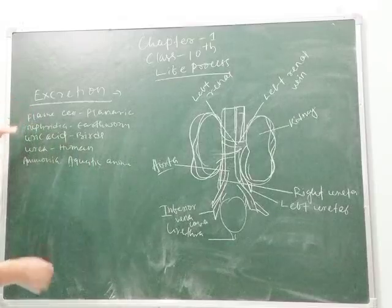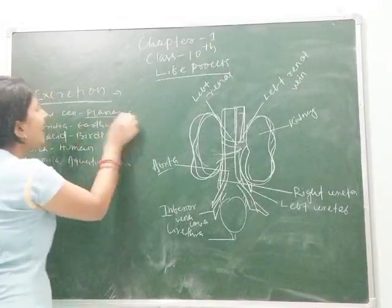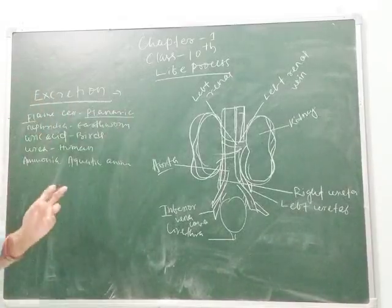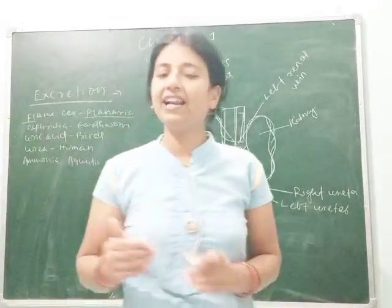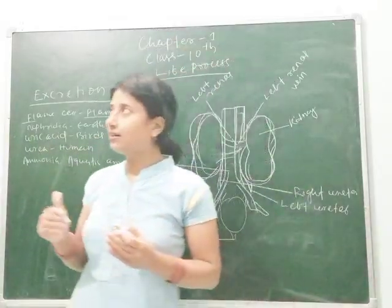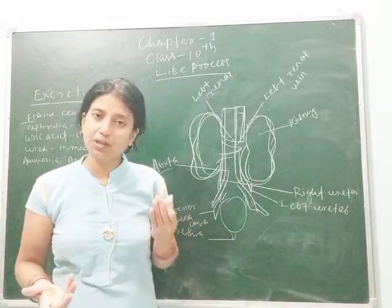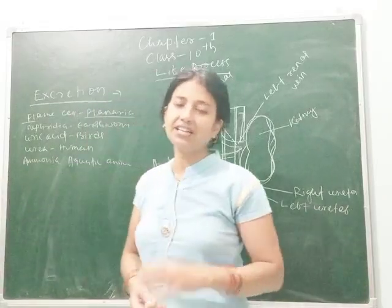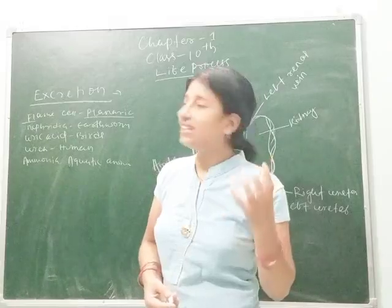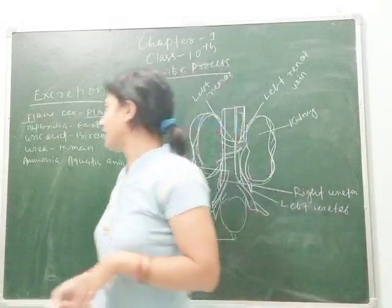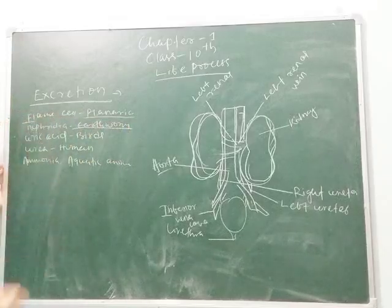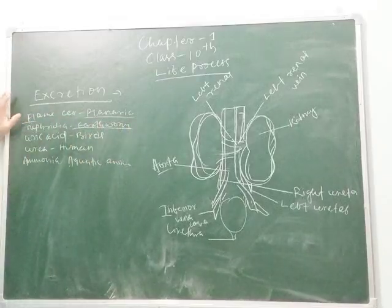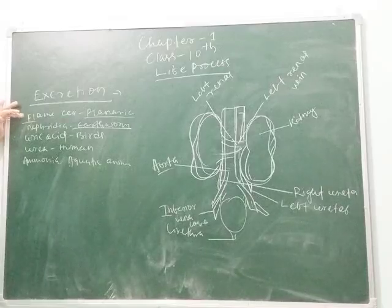Moving to multicellular organisms: planaria has flame cells as excretory structures. In aquatic arthropods like prawn, green glands are present as the excretory organ.